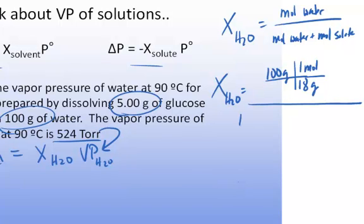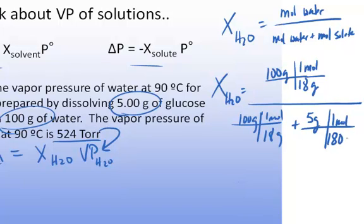And then the total is the moles of water, which is 100 grams times one mole divided by 18 grams plus the moles of solute, which is just going to be 5 grams of the solute, divided by the molar mass there, which is 180, grams per mole for glucose. Plug that into your calculator, and you get that the mole fraction of water equals 0.995.